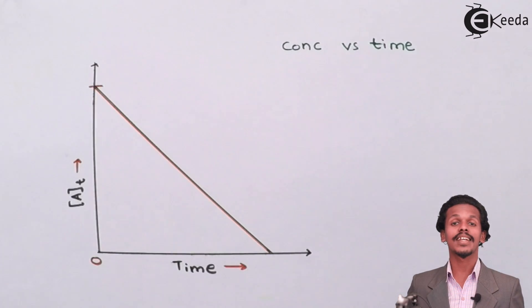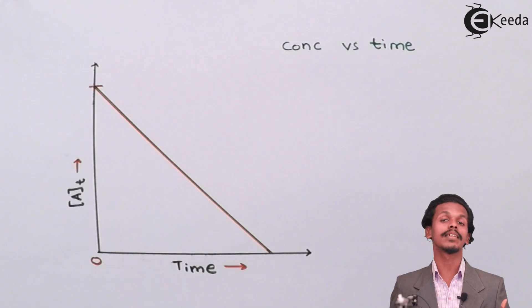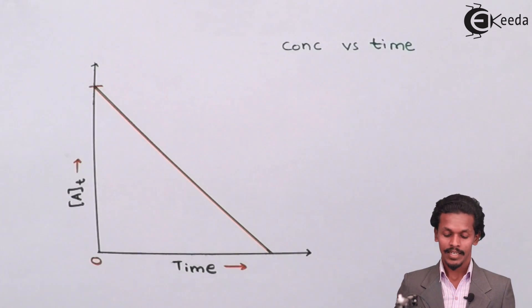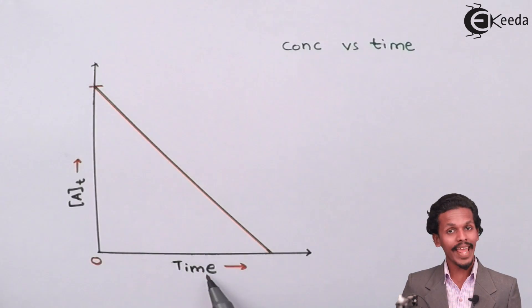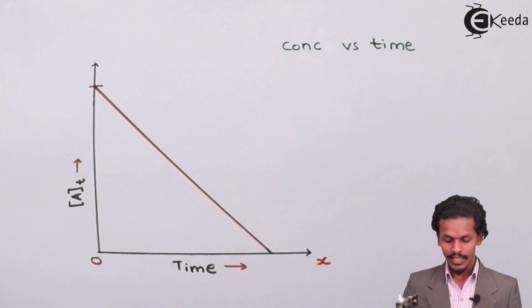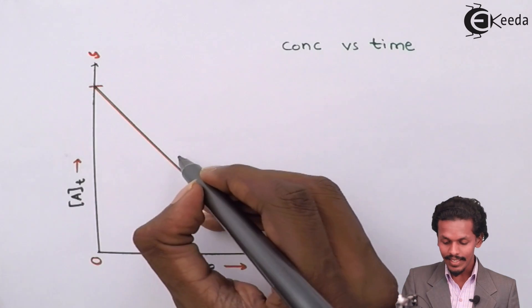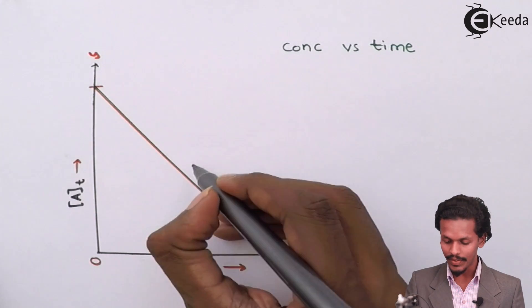This is the graph that we have got when concentration is plotted against time. Time is on the x-axis, while the concentration At is on the y-axis. And this is the negative slope that we have got,